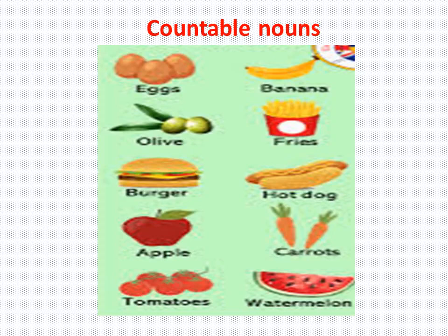We can count them. Here, three eggs are there — comes under countable noun. One banana, two plates of fries — we can count them. Burger, hot dog, apple. Here, how many carrots are there? Two carrots. Here, five tomatoes are there. We can count these nouns. So these nouns come under uncountable nouns.